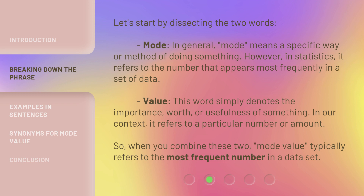Value. This word simply denotes the importance, worth, or usefulness of something. In our context, it refers to a particular number or amount. So, when you combine these two, Mode Value typically refers to the most frequent number in a data set.